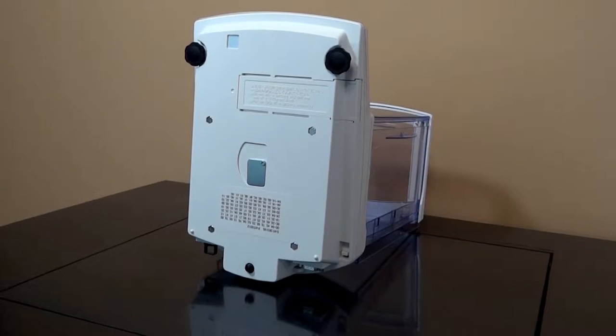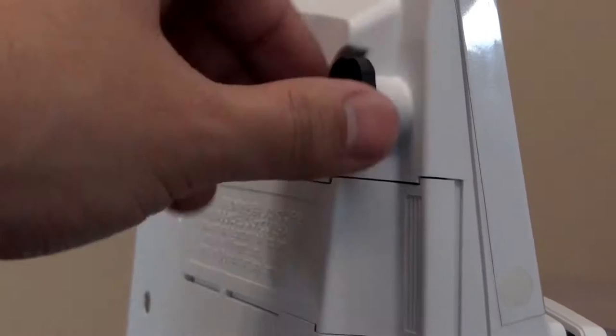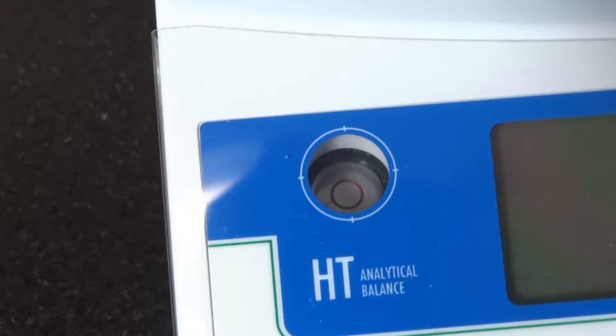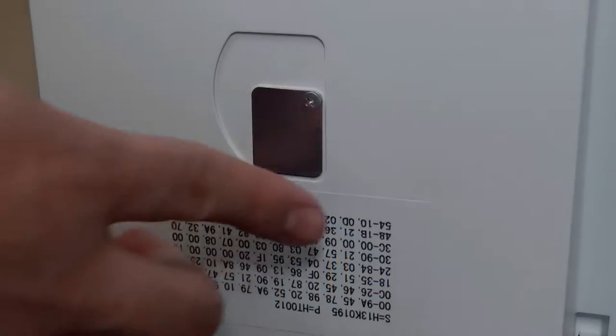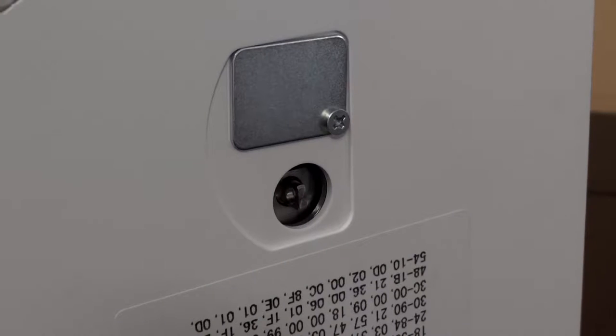Starting from the bottom of the balance, the HT has three support points, two of which are adjustable, and there is a spirit level next to the display to help with leveling. The metal plate under the balance can be rotated to reveal a hook used for under-balance weighing.